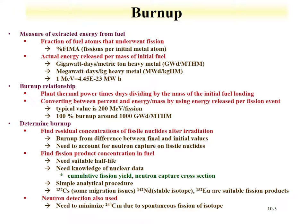Alternatively, you can find a fission product concentration that serves as a suitable burn-up indicator. It would need a half-life that is relatively easy to measure — not too short and not too long — and you need its cumulative fission yield, so you know how much of that isotope is produced per fission, and its neutron capture cross-section to account for conversion to a heavier isotope. Cesium-137, neodymium-142, and europium-152 are often used for this purpose. One can also use neutron detection, but must account for curium-244 due to its spontaneous fission.